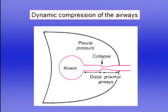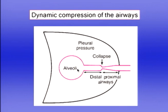This drawing gives us additional information about dynamic compression, showing the collapse point which divides the airways into proximal (near the mouth) and distal portions. Flow rate is determined by alveolar pressure minus pressure at the collapse point. This means that towards the end of the flow-volume curve, we're looking at the contribution of very small airways — the further down the curve, the smaller the airways that count.